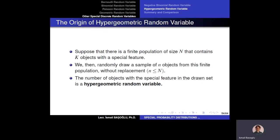Imagine you have a ball, and in this ball there are 1,000 little balls. Among these 1,000 little balls, 400 of them are red balls and 600 of them are blue balls. So there is a population of 1,000 balls here, where capital N is 1,000, and k — in our case 400 — are objects with a special feature, which are red balls. We then randomly draw a sample of lowercase n objects from this finite population without replacement.